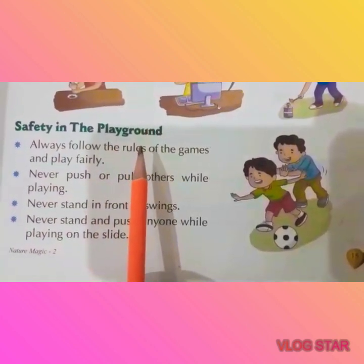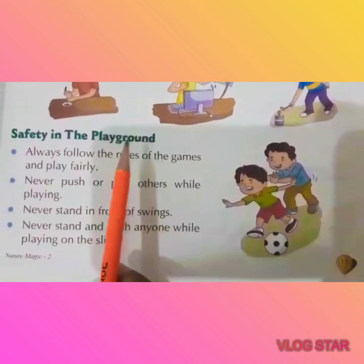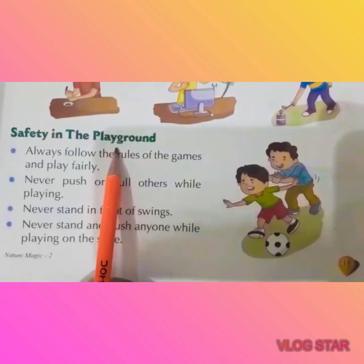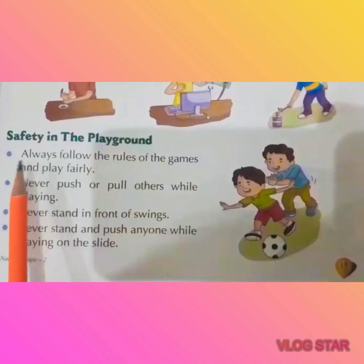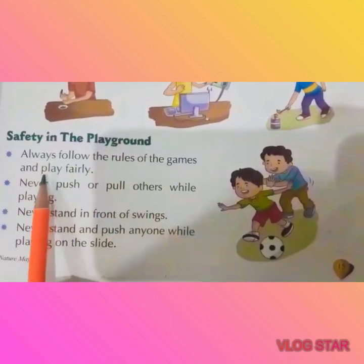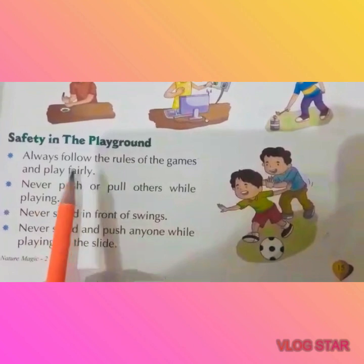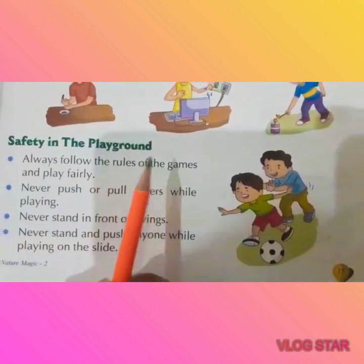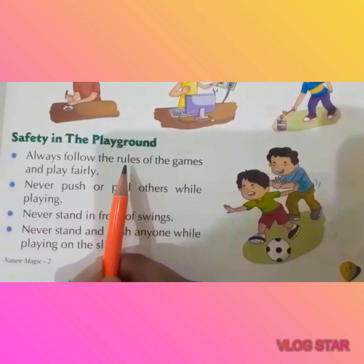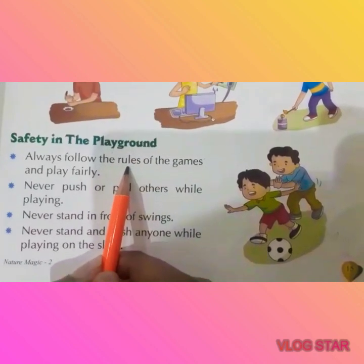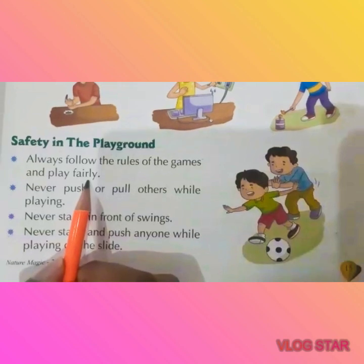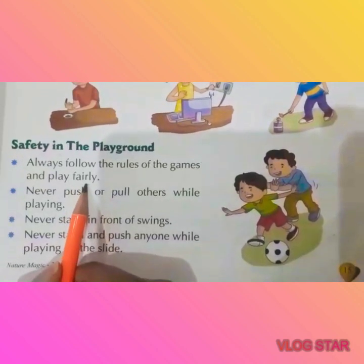If you play in the playground — at school or in the gardens — you have to follow the rules. The first rule is: always follow the rules of the games and play fairly. Whatever game you play, like football, always follow the rules. Playing fairly means no cheating — always play fair games.